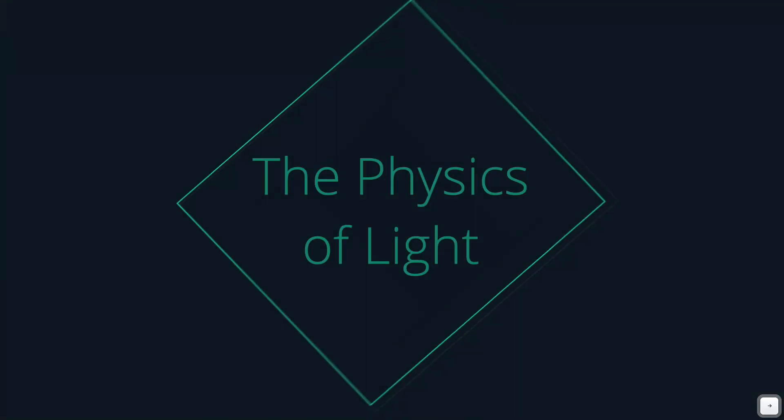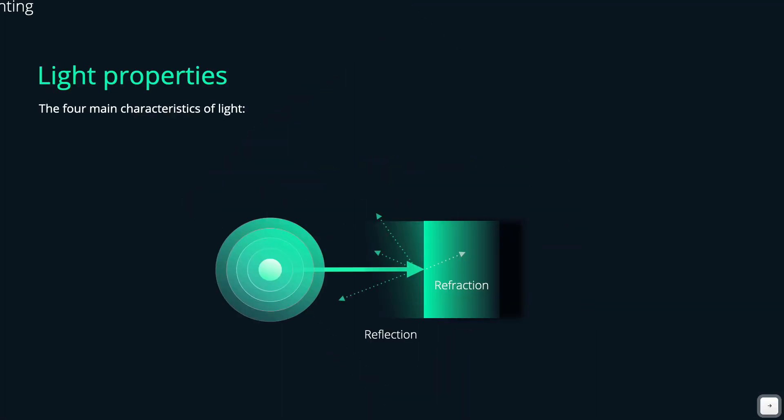Let's start with some physics and some terms in the beginning. When we have a look at this little illustration here we have a light source on the left side and we illustrate the direction of light with arrows. We also simplify light in a way that we speak about light rays and not about light waves.